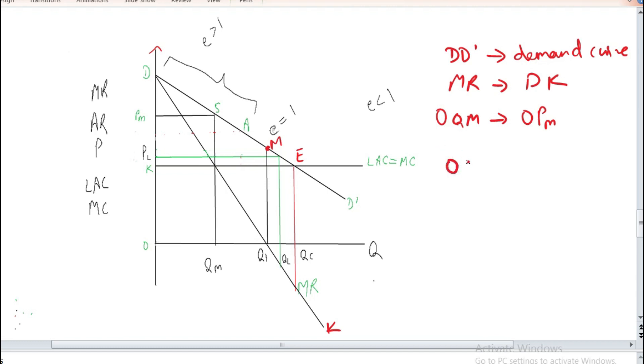At point E, demand and LAC curve is intersecting to each other. At OK level of price, OQC level of production will take place. This is price and these two are production level and this is price level.